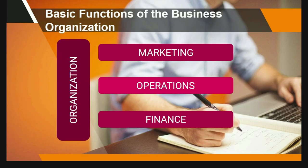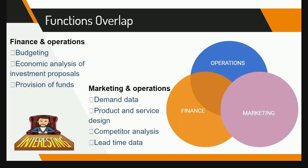Every organization has three major functions. These are: marketing, which sells and distributes the products; finance, which handles the money of the company; and operations. Most often, functions overlap. For example, finance and operations overlap in budgeting, economic analysis of investment proposals, and provision of funds. When it comes to marketing and operations, there is an overlap in demand data, product and services design, competitor analysis, and lead time data.